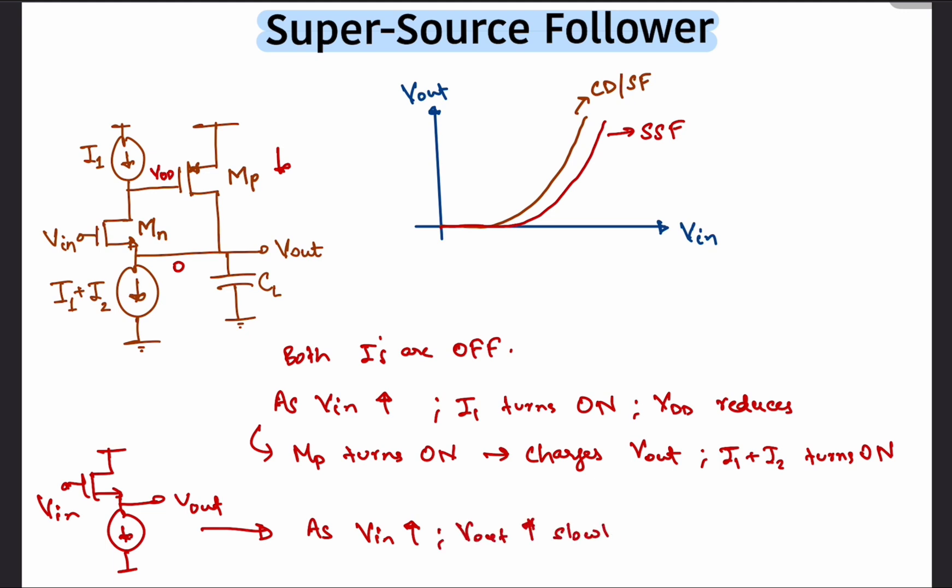Since for the supersource follower we have an additional constraint that the gate voltage of Mp should be sufficiently low for the circuit to work properly, thus we see a shifted graph as shown.